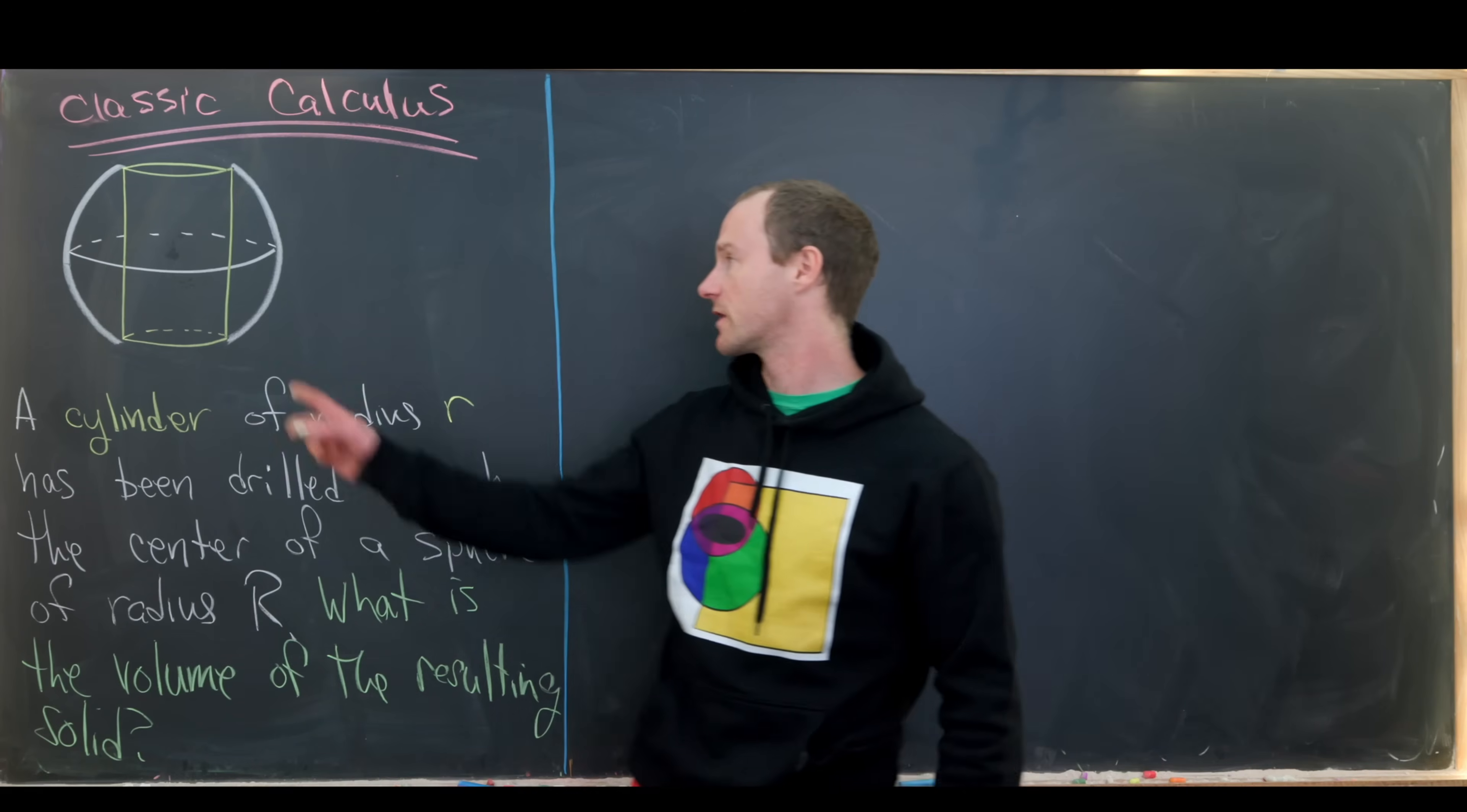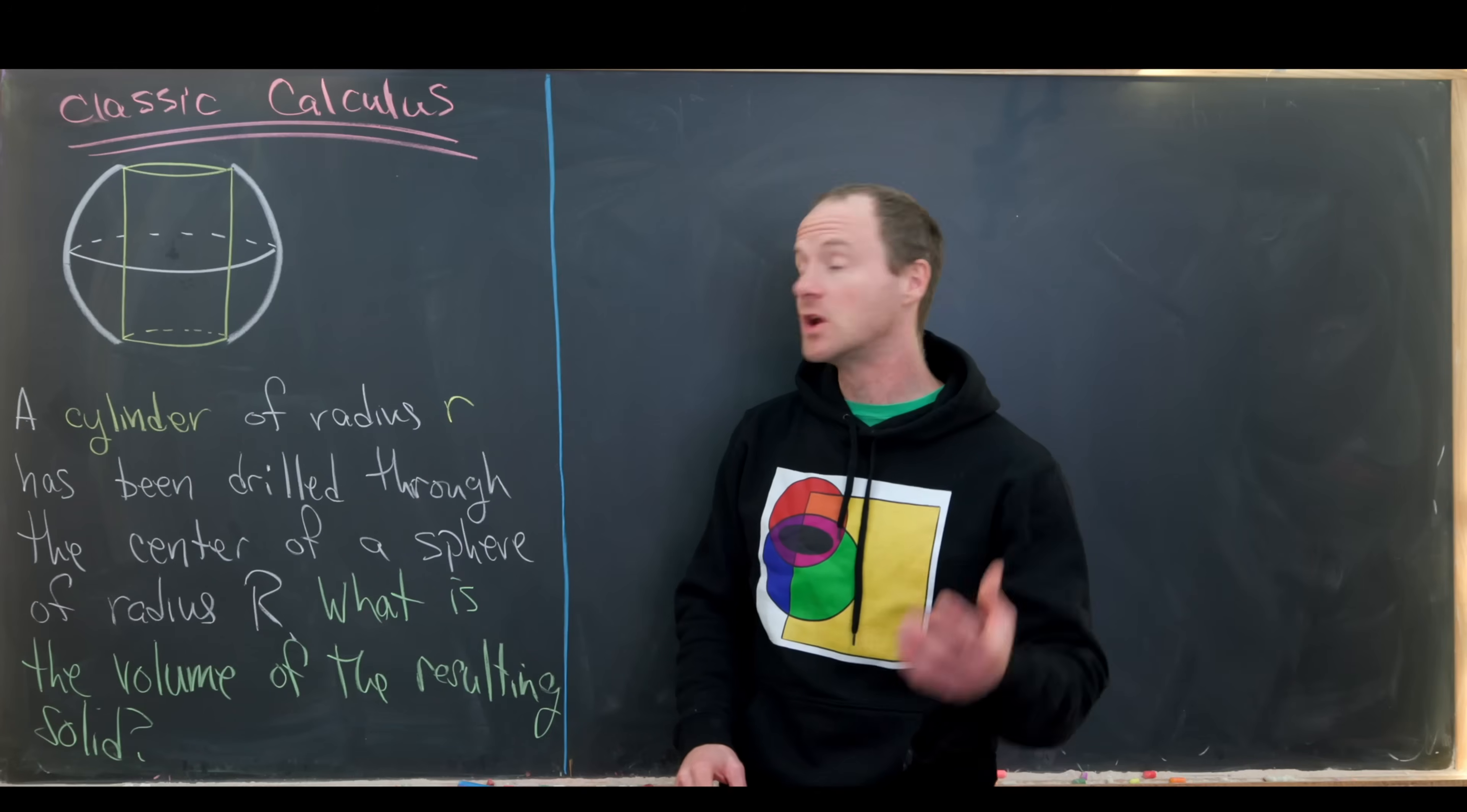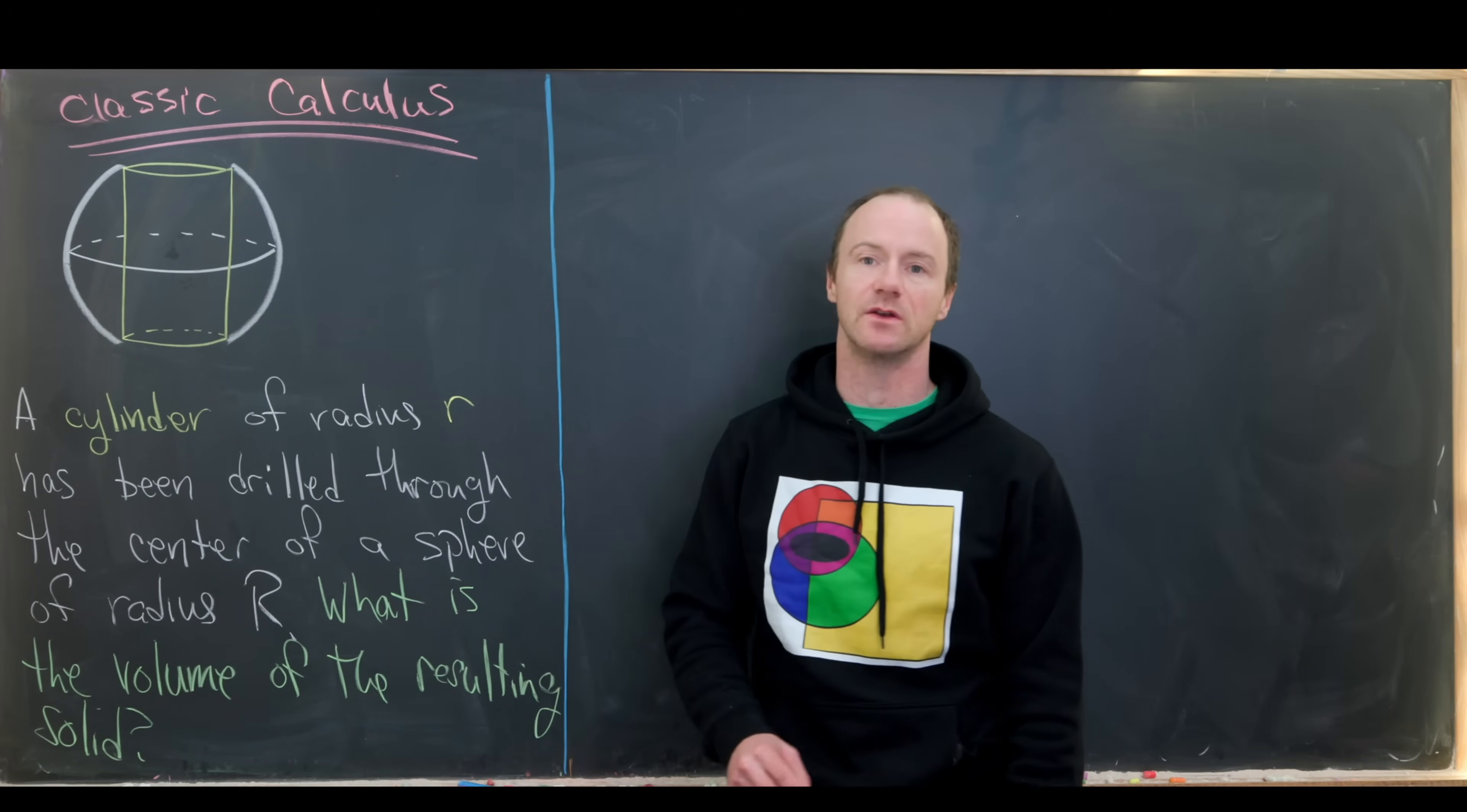So the resulting solid looks a little bit like this. Notice that I've drawn the cylinder going through the center of that sphere in yellow, and the sphere is in white chalk.